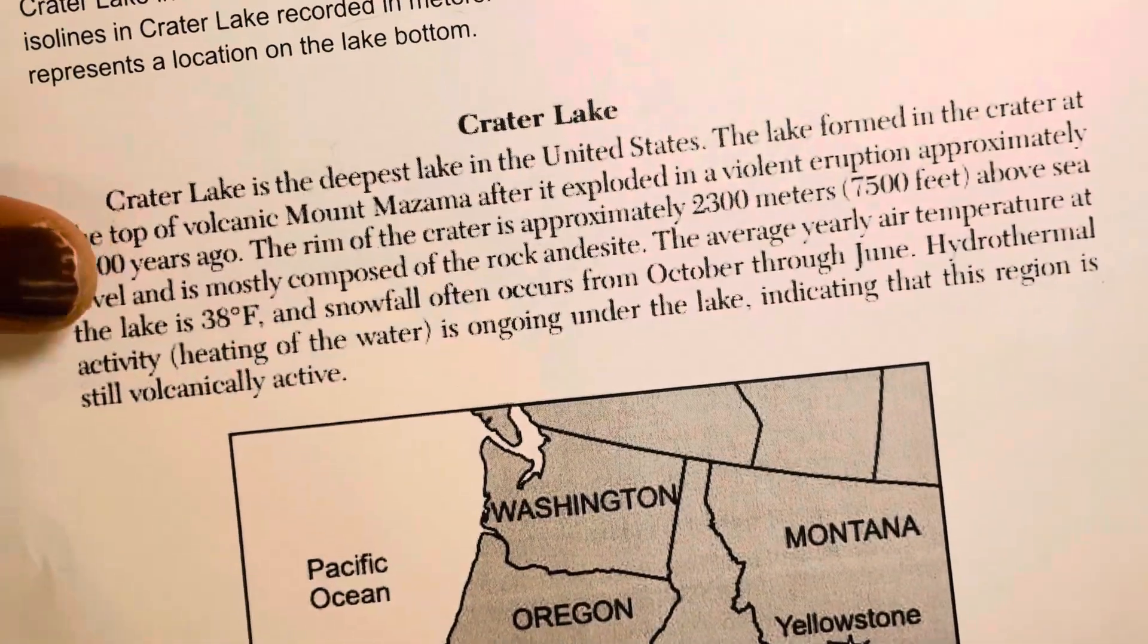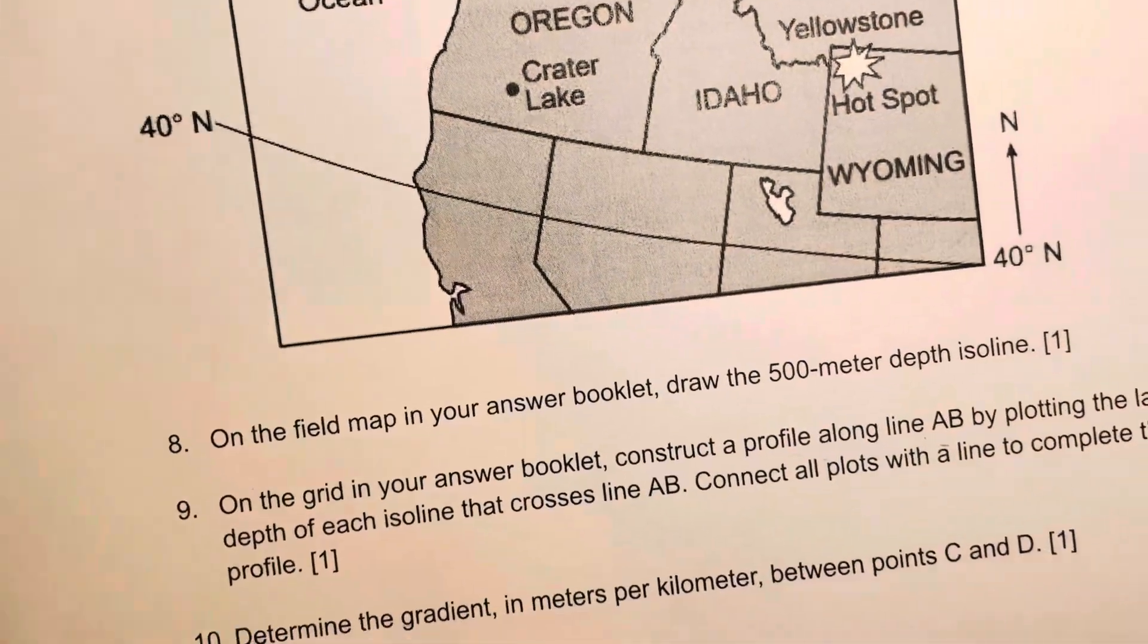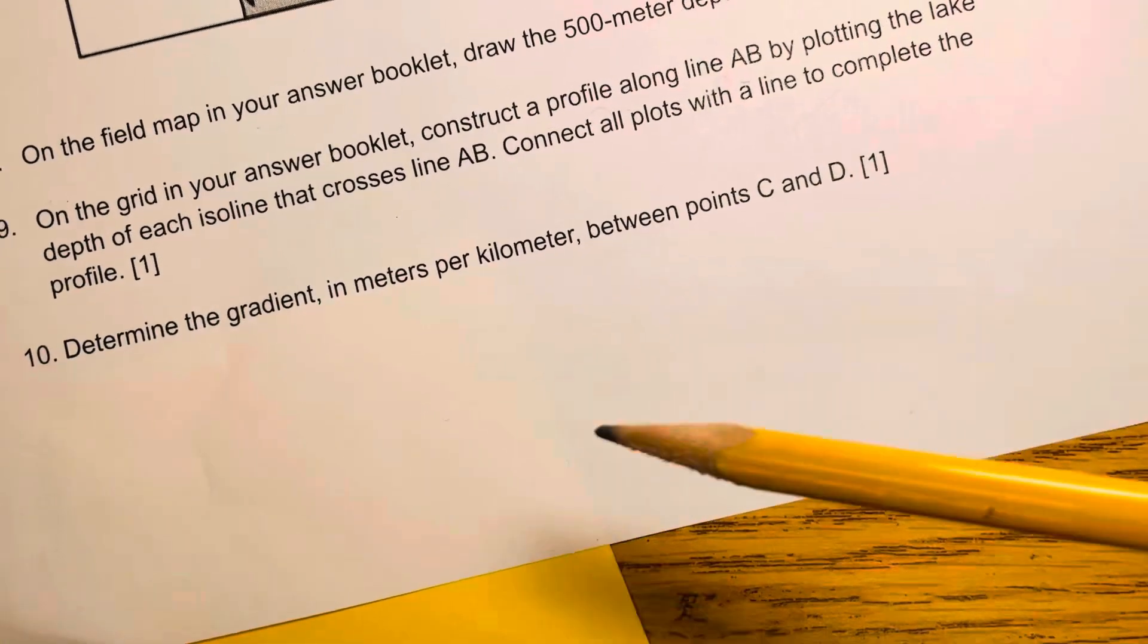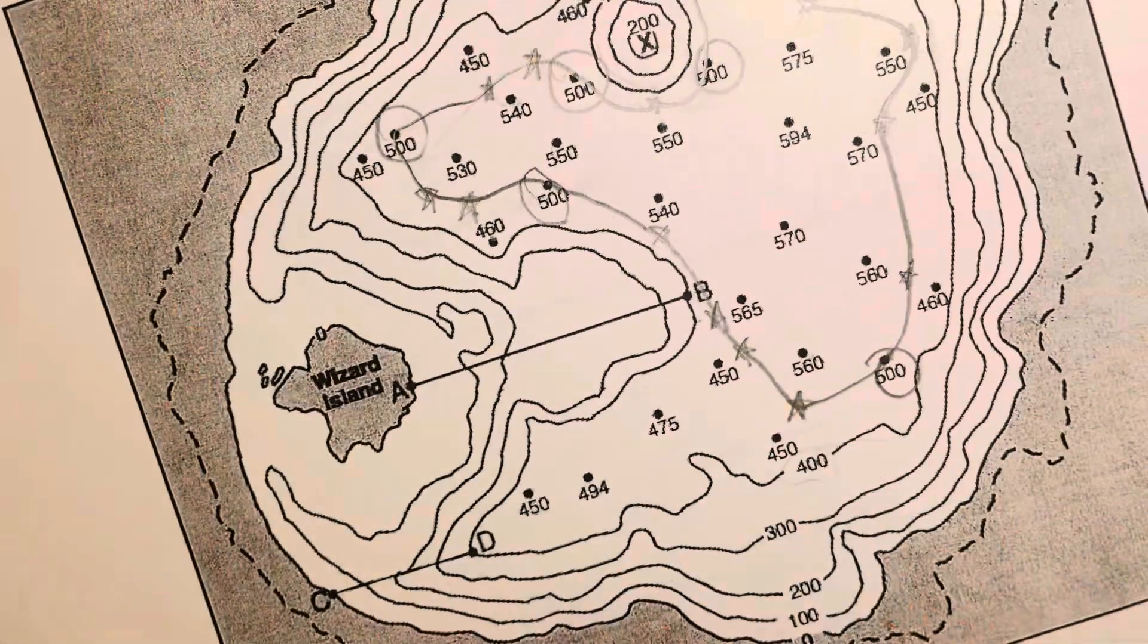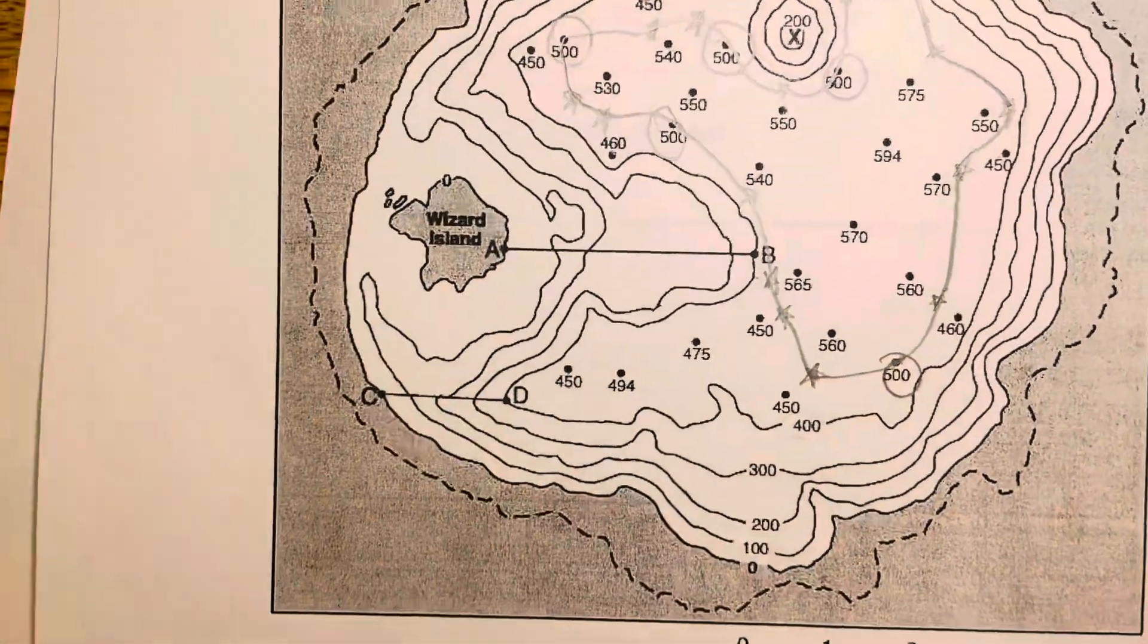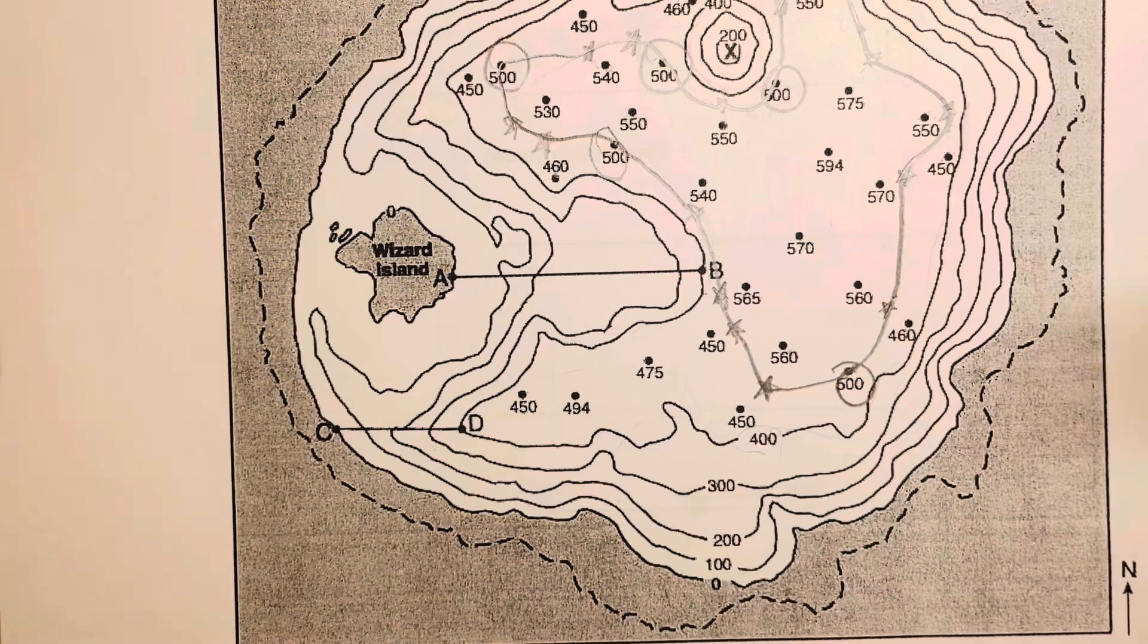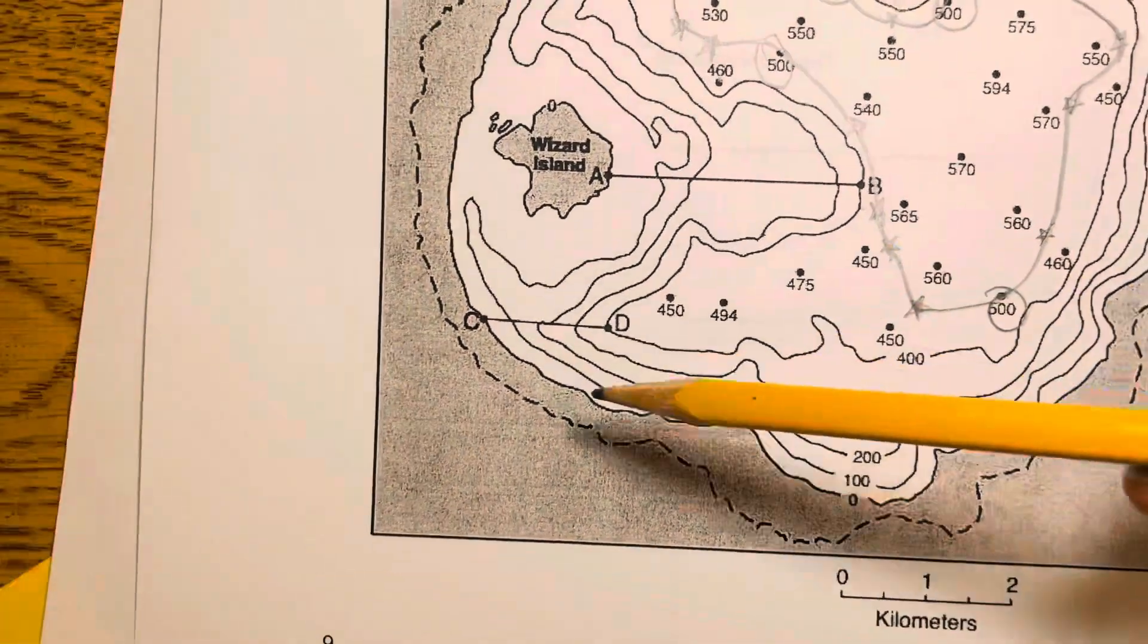Hey guys, we're continuing with our Regents review series. Today we're answering question 10. Determine the gradient in meters per kilometer between point C and D. It's talking about this map right here in your answer booklet in which we drew our ice lines previously. It's asking for the gradient between C and D.